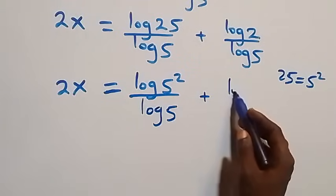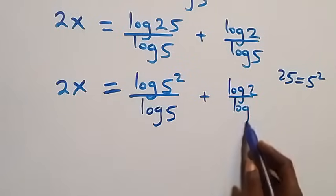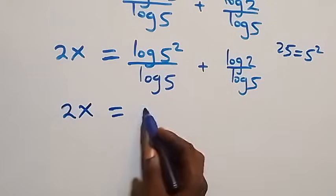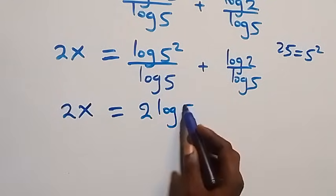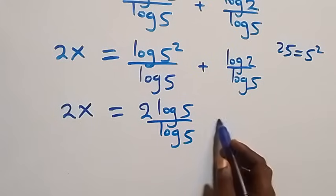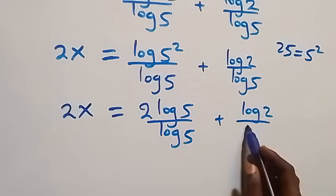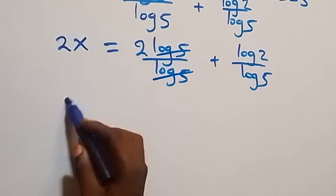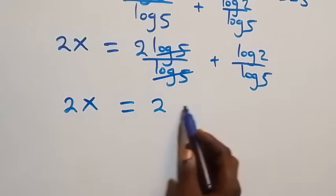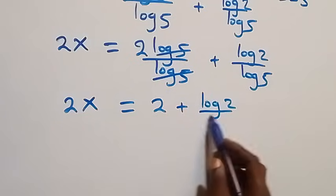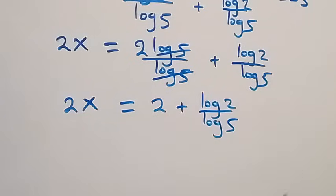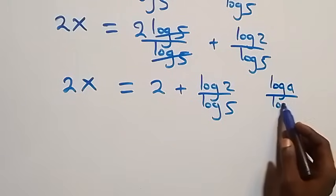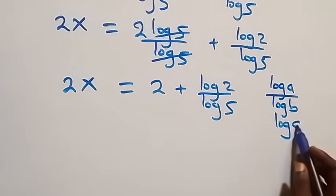Applying the power rule of logarithms, the 2 comes out front and we have 2x equals 2·log 5 over log 5, plus log 2 over log 5. From here, log 5 cancels each other, and we have 2x equals 2 plus log 2 over log 5. Applying the change of base rule — log a over log b equals log a to base b — this becomes 2x equals 2 plus log 2 to base 5.